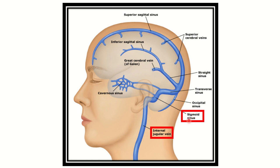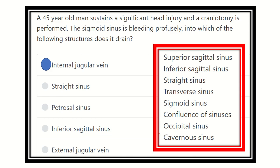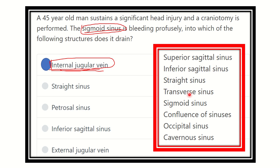So we can see that the sigmoid sinus drains into the internal jugular vein. Our answer is the internal jugular vein. On both sides of the head there is an internal jugular vein, and on both sides there is a sigmoid sinus, and each sigmoid sinus drains into the internal jugular vein. The named venous sinuses include: superior sagittal sinus, inferior sagittal sinus, straight sinus, transverse sinus, sigmoid sinus, confluence of sinuses, occipital sinus, and cavernous sinus. Thank you.